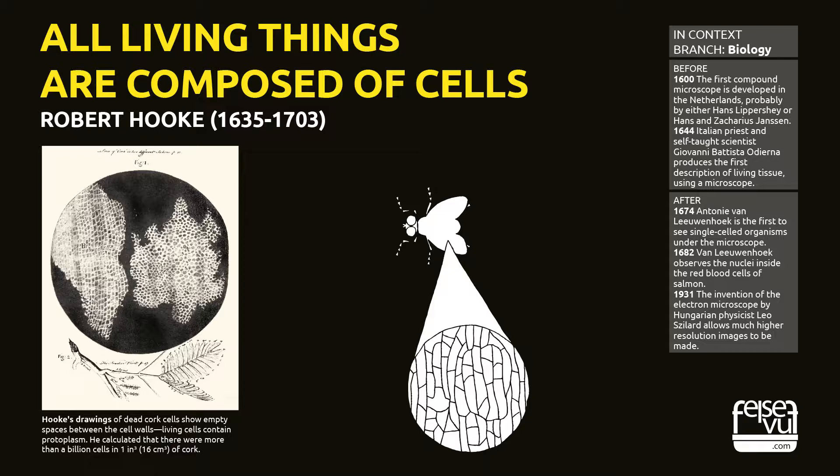The English diarist Samuel Pepys called Micrographia 'the most ingenious book that I ever read in my life.' Describing cells: one of Hooke's drawings was of a thin slice of cork. In the structure of the cork, he noted what looked like the walls dividing monks' cells in a monastery. These were the first recorded descriptions and drawings of cells — the basic units from which all living things are made.